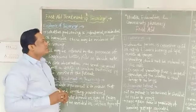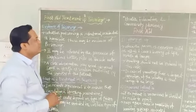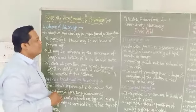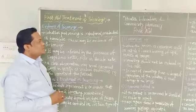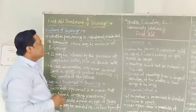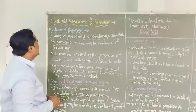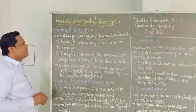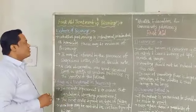The subject is health, education and quality pharmacy, derivative with chapter number 4, that is first aid. In this lecture we will see the first aid equipment in poisoning.